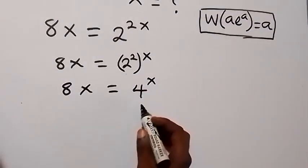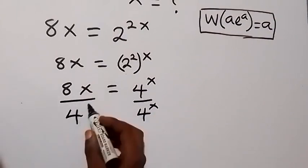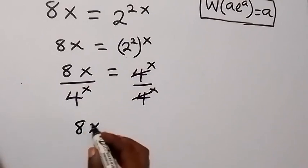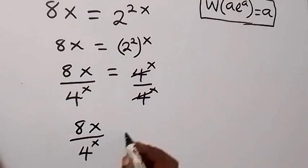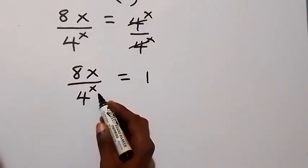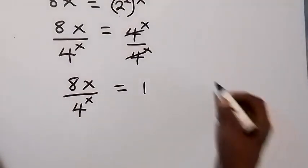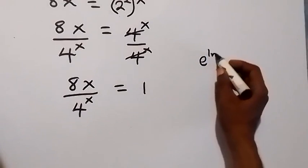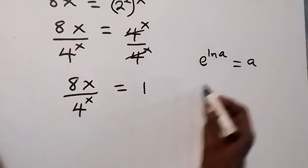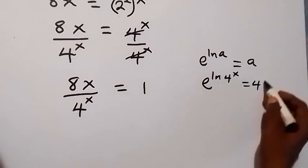In the next step, let's divide both sides by 4 raised to power x, such that the 4^x terms cancel to 1. From the law of indices, we can write 4 raised to power x in terms of exponent. When we have exponent of ln A, this equals A. So similarly, we can write this as exponent of ln 4 raised to power x, which also equals 4 raised to power x.